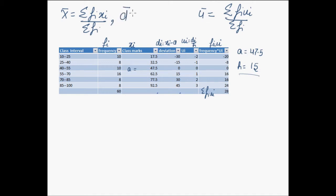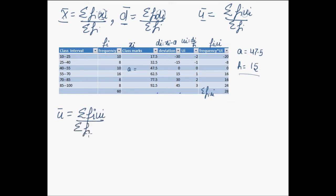Similarly, d bar which we used in the previous method is summation fi*di over summation fi. That is, whichever variable's mean is calculated is written in all the cases. For mean of the observations, we calculated the individual class marks. For mean deviation, we producted individual deviations with the frequencies. So in these calculations, we can calculate u bar easily, which is summation fi*ui over summation fi. But our ultimate goal is the calculation of mean of observations, so let us mold this formula. First of all, what is ui? Let us substitute it as di over h.